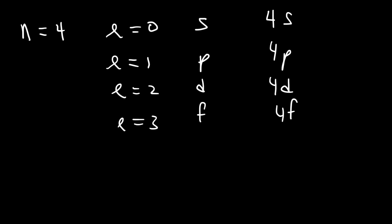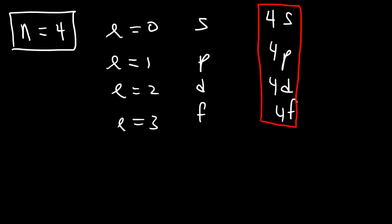Notice that the n value is always equal to the number of sublevels. So when n is six, you should expect six sublevels. When n is three, we have three sublevels: s, p, and d.